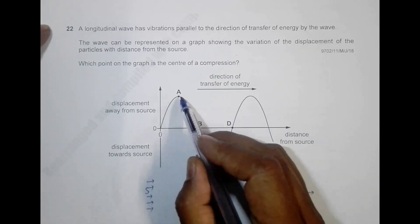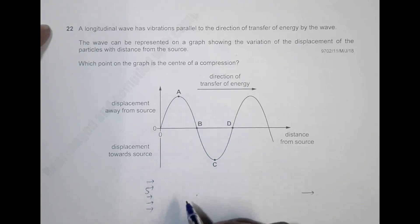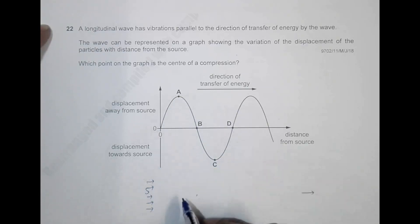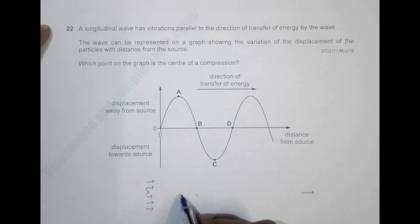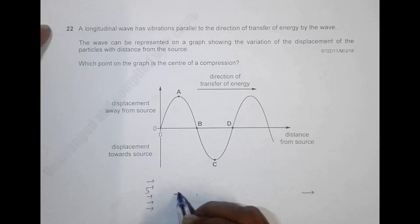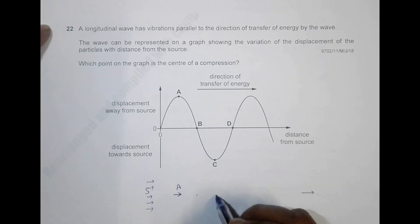At point A, the particles are having maximum displacement away from the source. So their position right now is displaced away from the source at maximum amplitude.